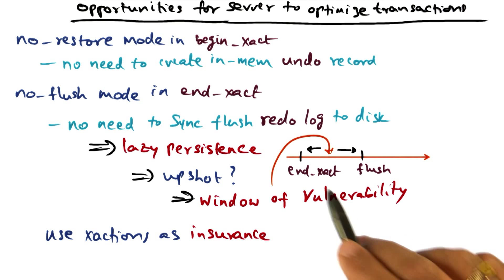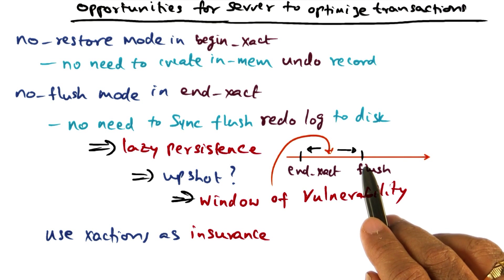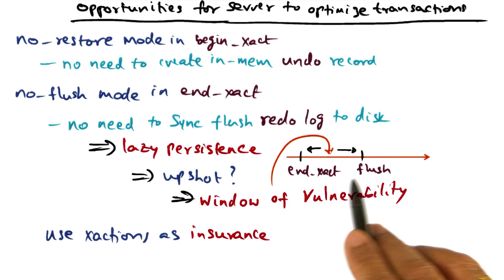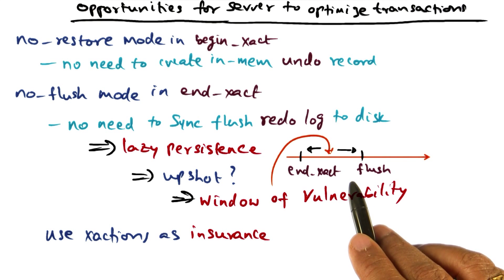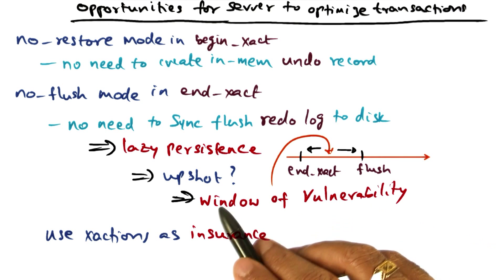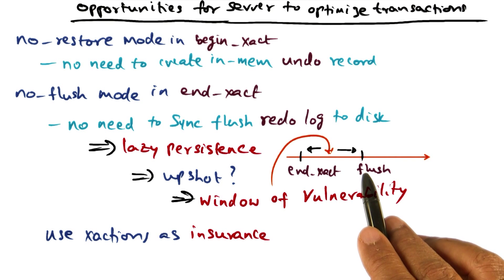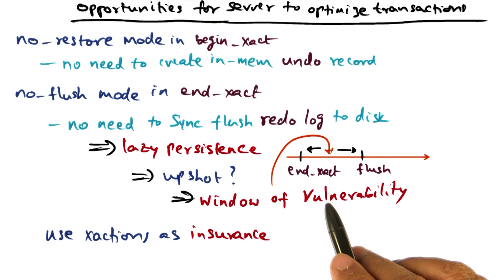End transaction happened here. And maybe by the time RVM gets to write it out to the disk, so much time has elapsed. So this time window is the window of vulnerability. If this accesses time, then end transaction happened here. And this is the point where the redo record was committed to the disk. So this is the portion which we're calling as a window of vulnerability.